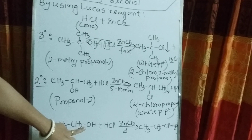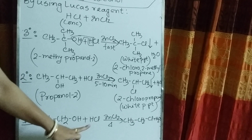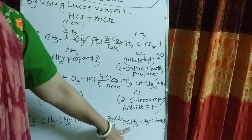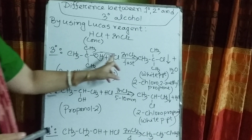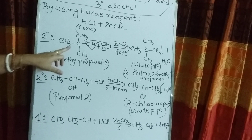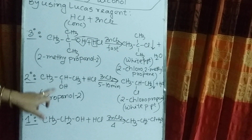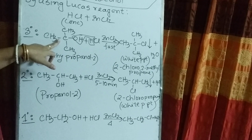For primary alcohol, when ethanol is used with Lucas reagent at normal temperature, it does not react. But when heat is applied, it creates a turbid solution of ethyl chloride. The reason is that though we use the same reagent for all three alcohols, tertiary carbocation is formed for 3° alcohol, secondary carbocation for 2°, and primary carbocation for 1°.